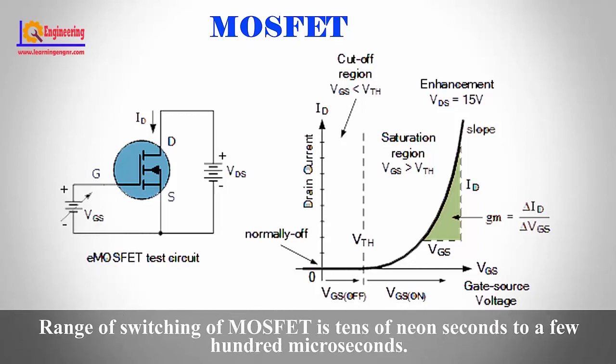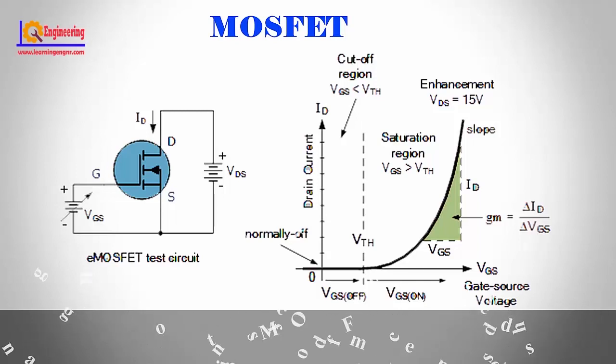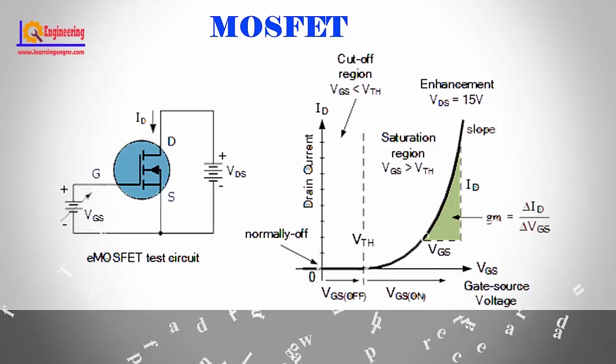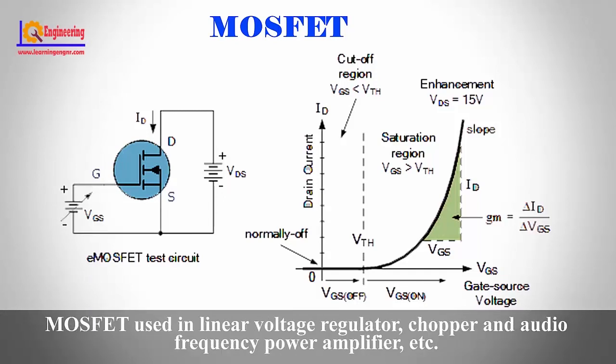The switching range of a MOSFET spans from nanoseconds to a few hundred microseconds. MOSFETs are used in linear voltage regulators, choppers, and audio frequency power amplifiers.